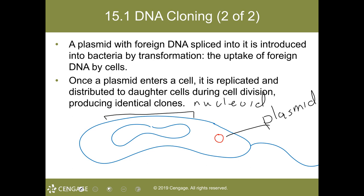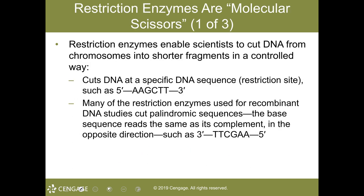With bacterial cloning, you insert a single gene into a bacterium. Restriction enzymes cut both the DNA plasmid and the DNA from the donor source — such as the DNA from a jellyfish that has the protein allowing it to glow. When the restriction enzymes cut the DNA at specific nucleotide sequences, you have that gene of interest. Since entire genomes are now known, you identify the appropriate restriction enzyme to cut that specific gene.